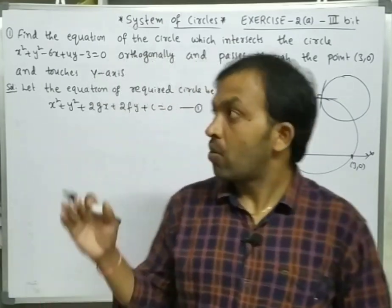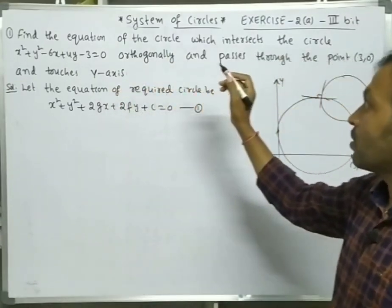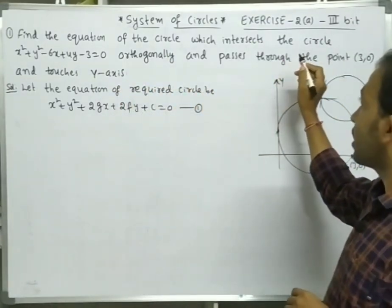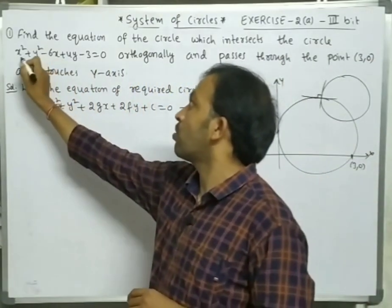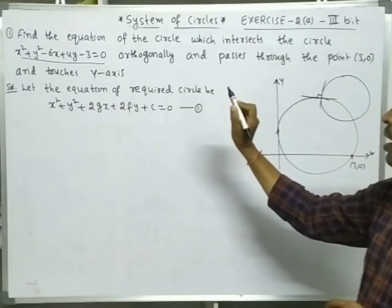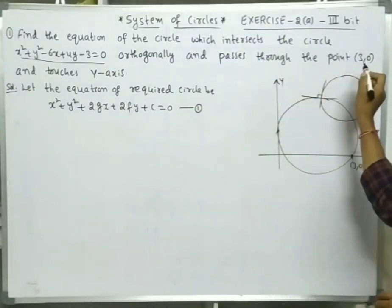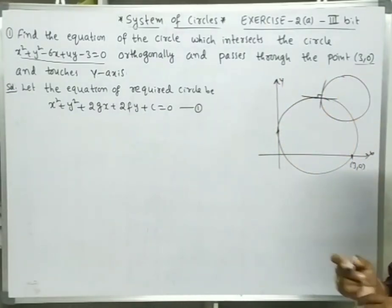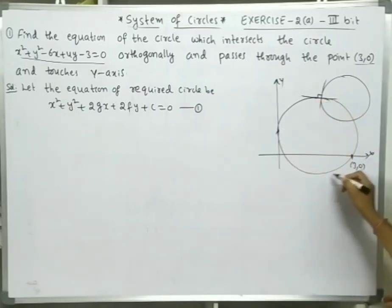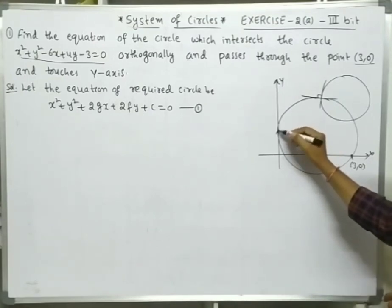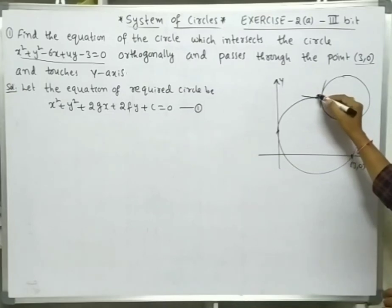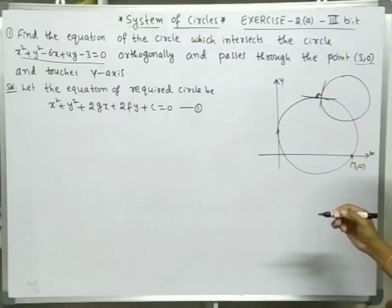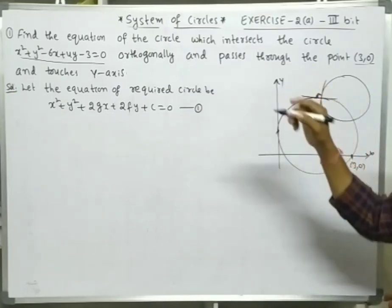So in those 3rd bit problems, the 1st one: find the equation of the circle which intersects the circle x² + y² − 6x + 4y − 3 = 0 orthogonally, and passes through the point (3, 0) and touches the y-axis.